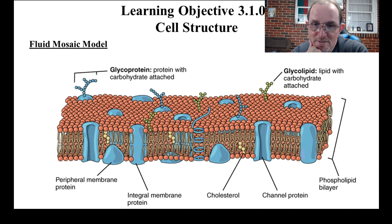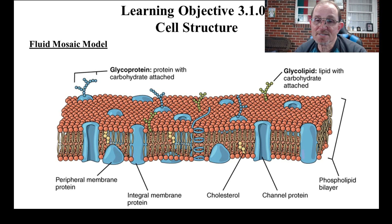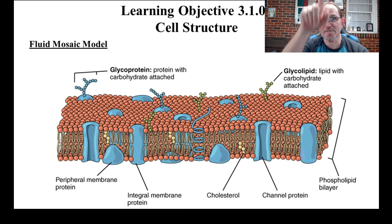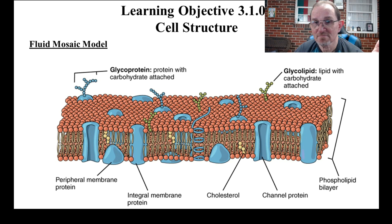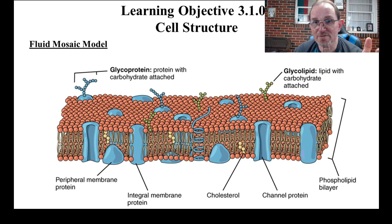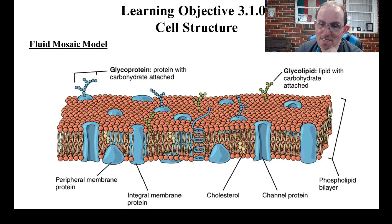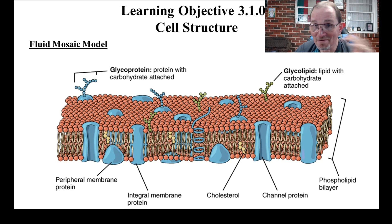The fluid mosaic model of the plasma membrane — those lipids can move back and forth, up and down inside the bilayer. They're perfectly free to move laterally but they don't move in and out. Why don't they move in and out? Because of those non-polar tails — non-polar tails do not like water. That's what they mean when they say fluid mosaic: these have some ability to move around laterally but not in and out.